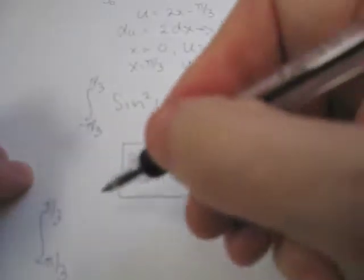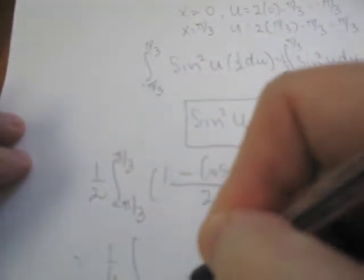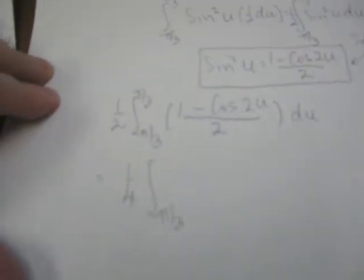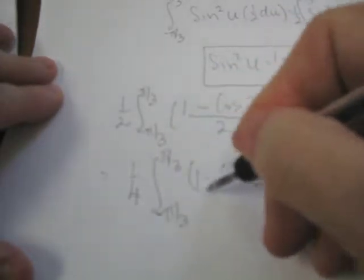Now, if that's the case, let's replace our sin squared with this identity. So the integral would become negative π/3 to π/3 of 1 minus cos 2u over 2 du, and we have a half out the front. If we remove the half, this dividing by 2, the integral will become 1 quarter integral from negative π/3 to π/3 of 1 minus the cosine of 2u du.